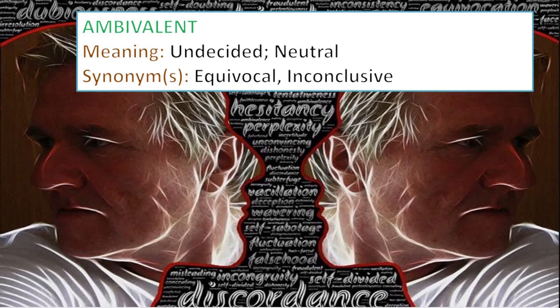Ambivalent means to have mixed feelings about something. Etymologically, ambivalent means you're being pulled by two equally strong things. But in practice, ambivalence often arises from caring very little any which way. You might feel ambivalent about your lunch options if you have to choose between Khichdi or Palak Paneer or something — it's undecided, you're neutral, equivocal or inconclusive. You don't know what's going on — you're ambivalent about it.